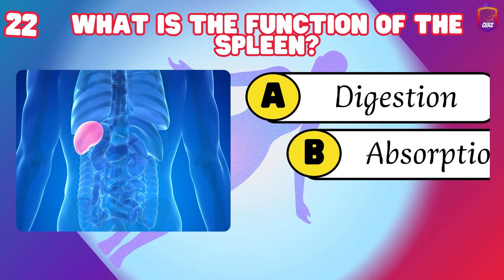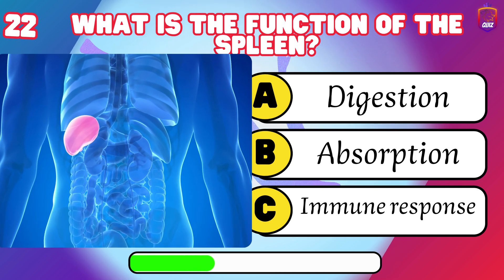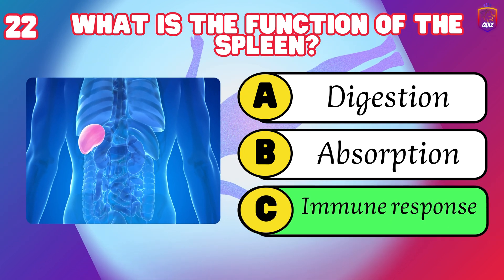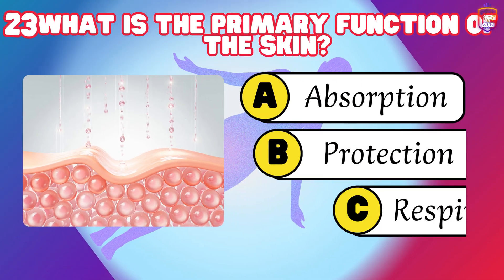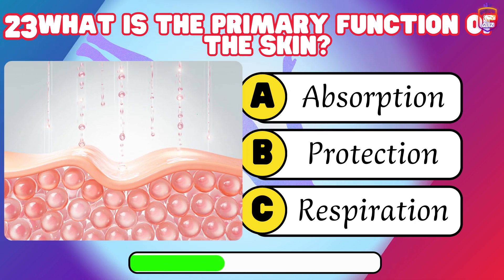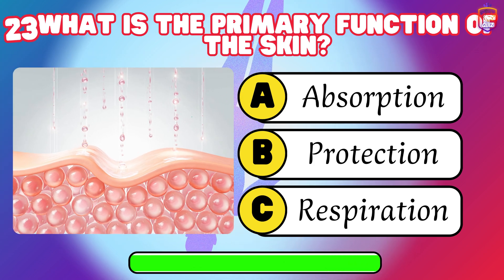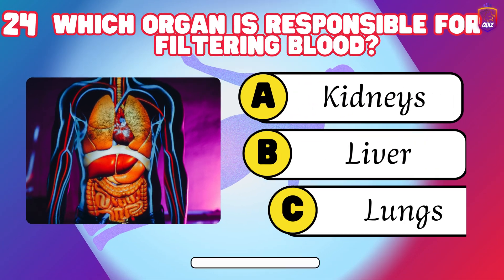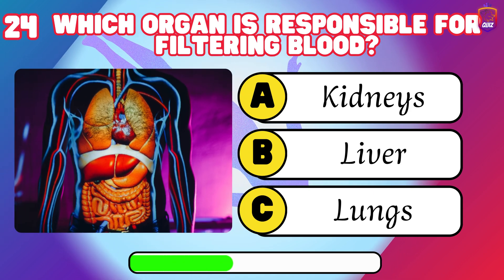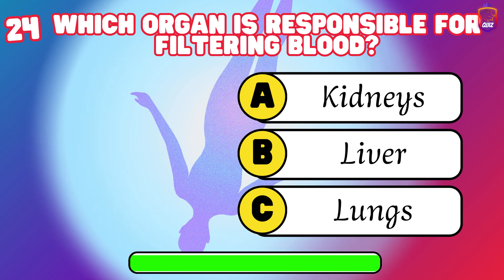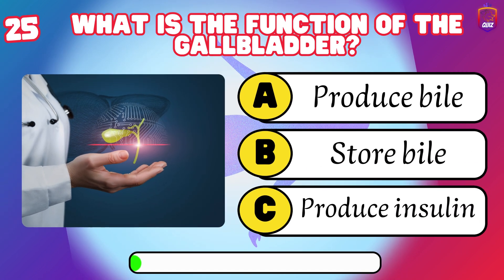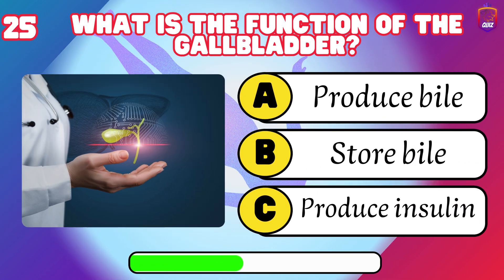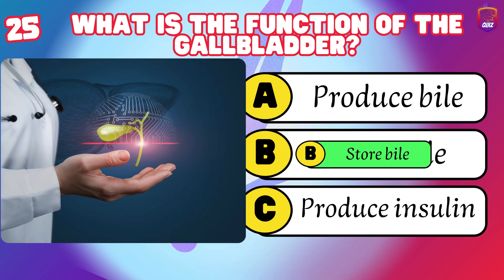What is the function of the thymus gland? Immune response. What is the primary function of the skin? Protection. Which organ is responsible for filtering blood? Kidneys. What is the function of the gallbladder? Store bile.